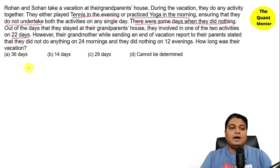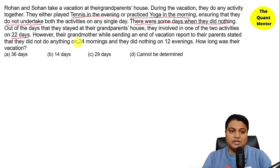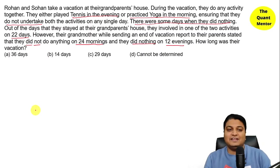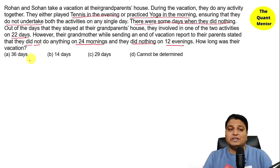Out of the days they stayed at their grandparents' house, they were involved in one of the two activities on 22 days. However, their grandmother, while sending an end-of-vacation report to their parents, stated that they did nothing on 24 mornings and they did nothing on 12 evenings. How long was their vacation?